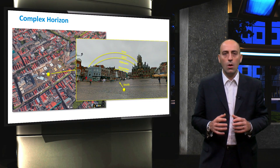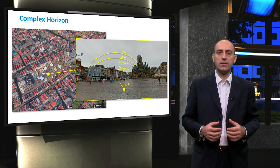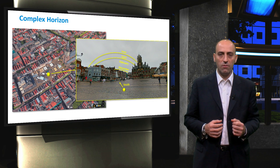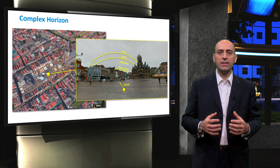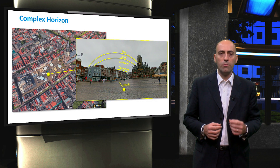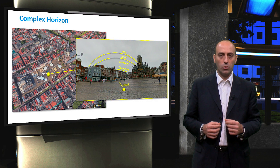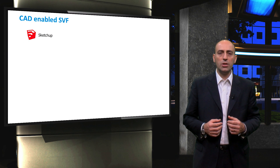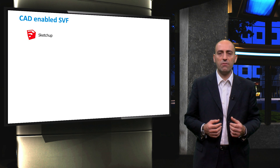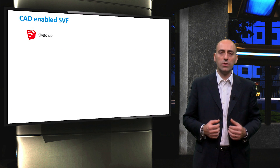Let's now see how the SkyView factor is calculated when dealing with complex horizons. When the PV system is located in a complex environment, such as an urban landscape, its surrounding environment will also have an influence on the SkyView factor. Thus, a detailed estimation of the SkyView factor has to be carried out. One available method to carry out such an analysis is the computer-aided design-enabled approach, or CAD-enabled approach.